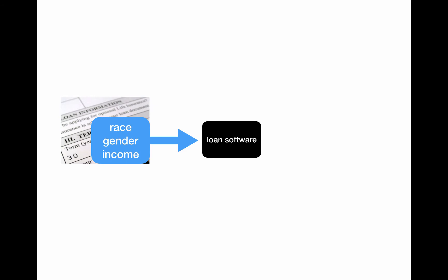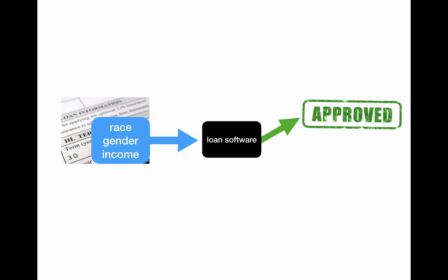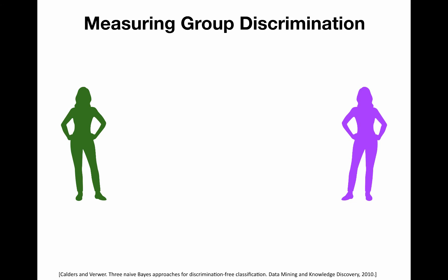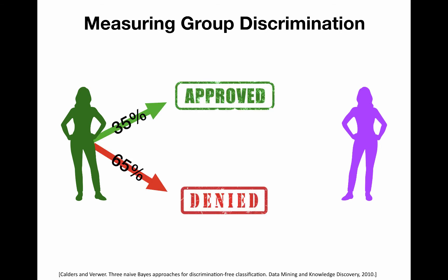Consider a piece of software that makes loan approval decisions. The inputs to this loan software are race, gender, and income bracket. The output is either approved or denied. Consider two groups of applicants: green people and purple people. Say the loan software approves loans for 35% of green people and 20% of purple people. Group discrimination is the difference in the percentages of approvals between groups.